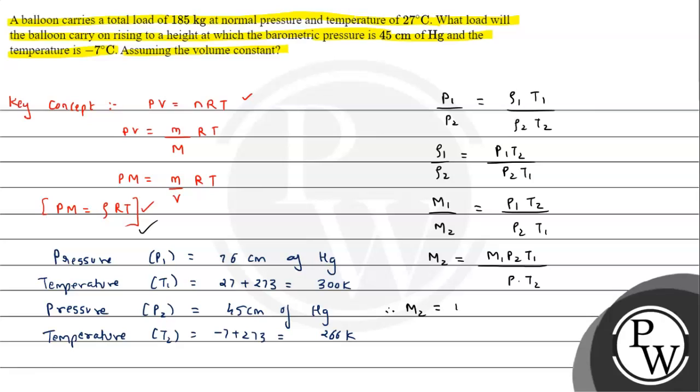We just need to substitute the values. M2 can be written as m1 is given as 185 into P2 is given as 45 into T1 is given as 300 divided by P1 into T2. The result is coming out to be 123.54 kg. So this much load can be carried at pressure of 45 cm of Hg and temperature minus 7. I hope you understood the solution, all the best.